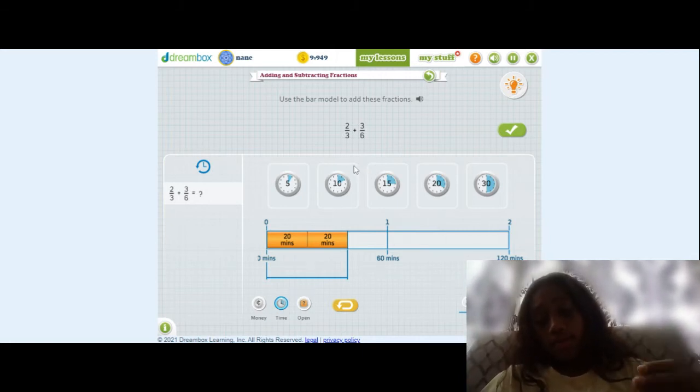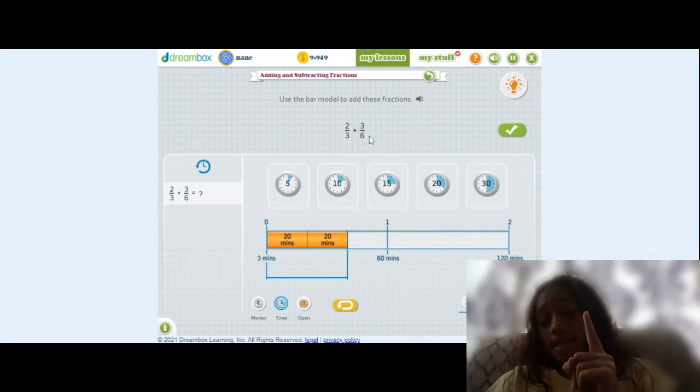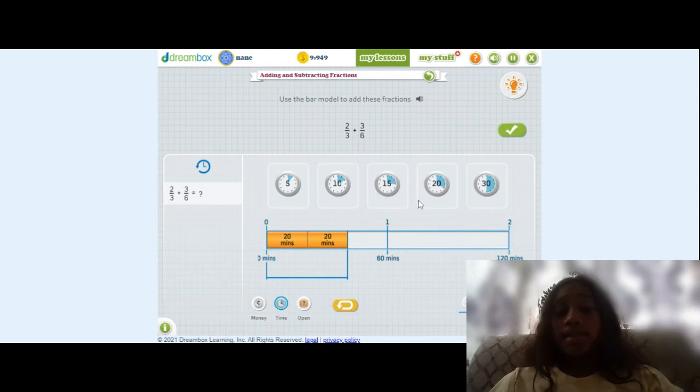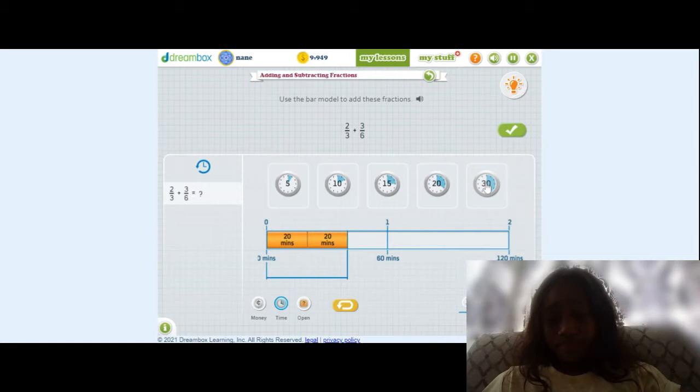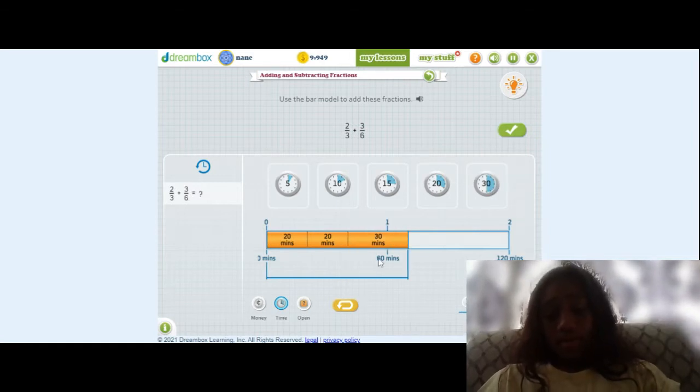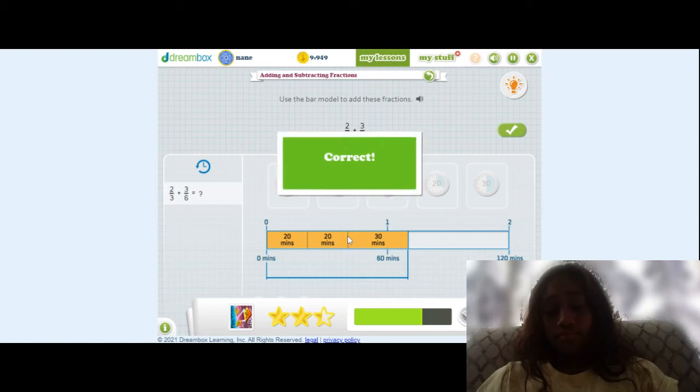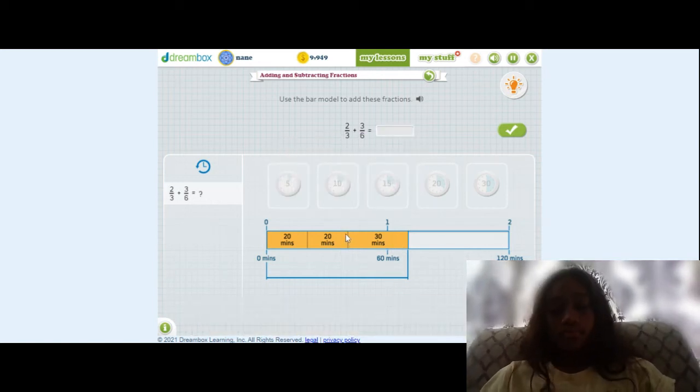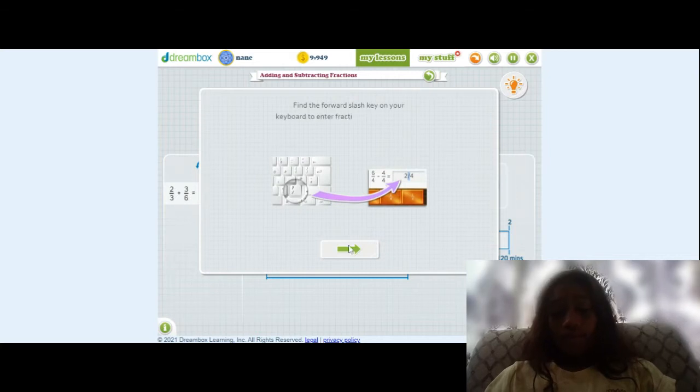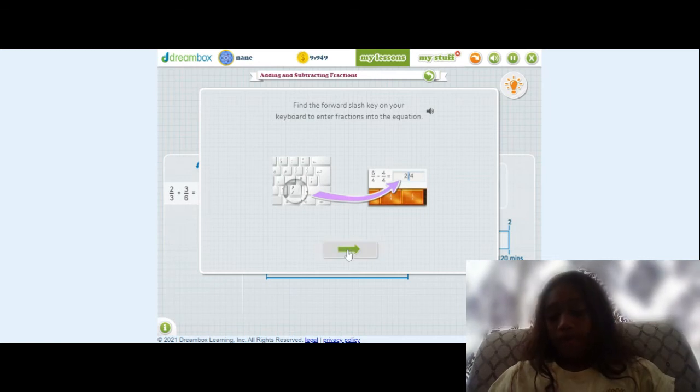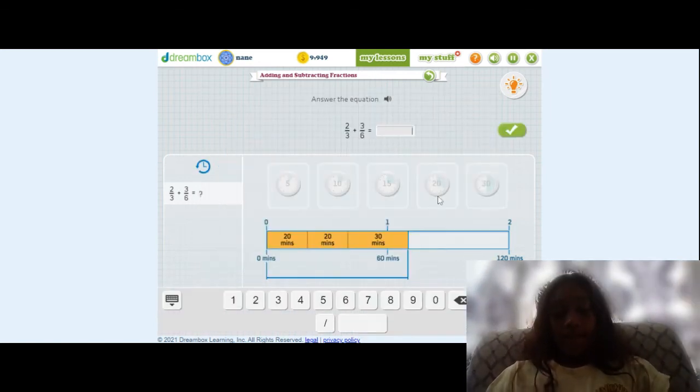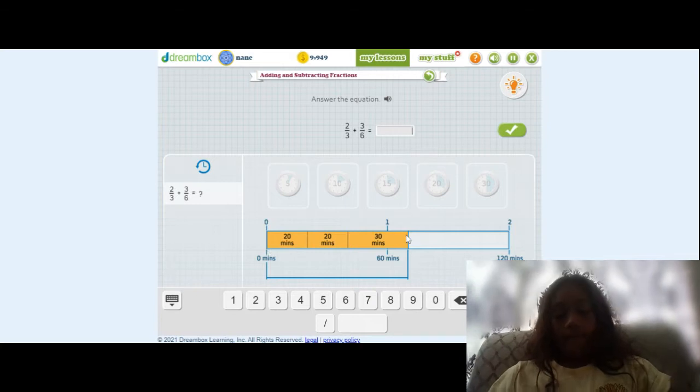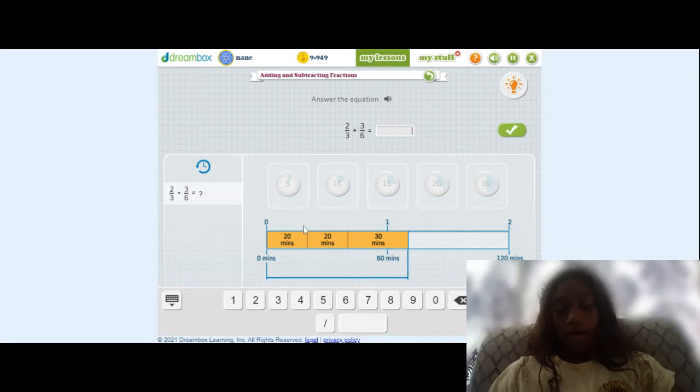Because one-third equals 20 minutes, so one-third of 60 minutes is 20 minutes. One-sixth of 60 minutes is 10 minutes, so three-sixths would be 30. So, let's just push it. Okay, so I already found the slash key. So we're going to enter the value that we have, two-thirds plus three-sixths. What does that equal?